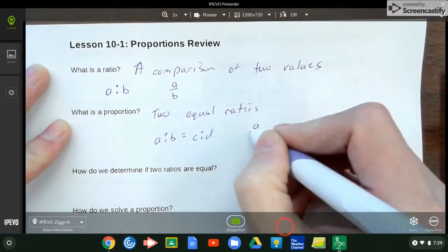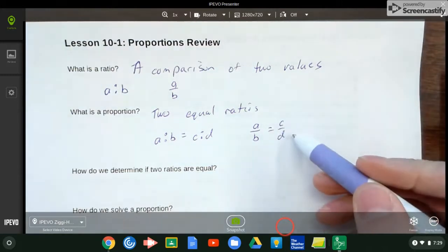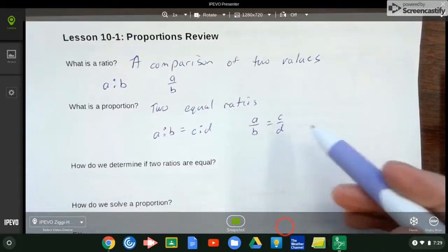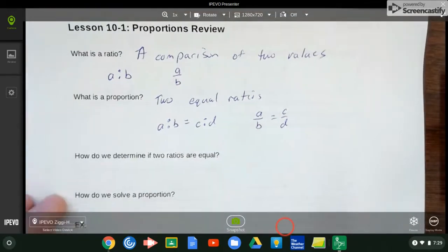We've dealt with this quite a bit, especially in our last unit when we were talking about the geometric mean - that was a type of proportion. So how do we determine if ratios are equal or proportions are equal?